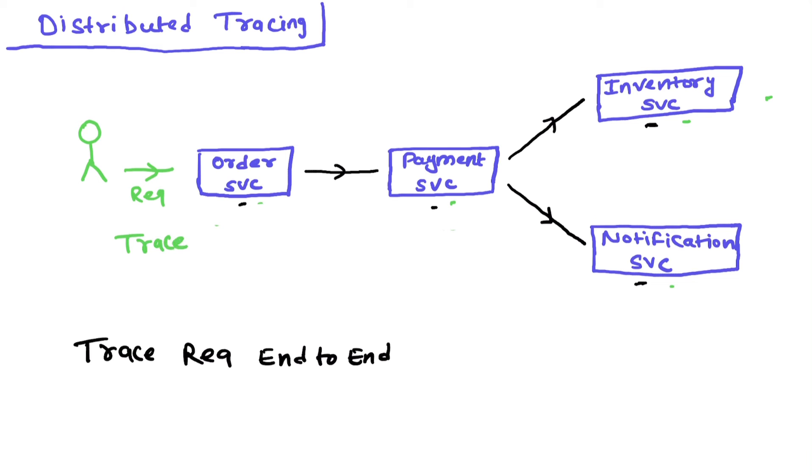This order service will log a trace ID for this request. Similarly, when the request goes to payment service, it will again log the same trace ID. And similarly, inventory service will log the same trace ID and notification service will log the same trace ID.